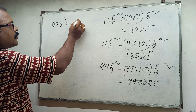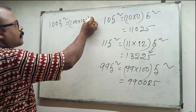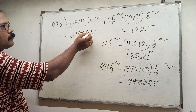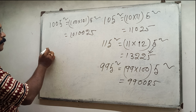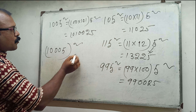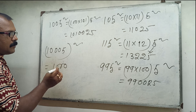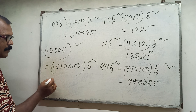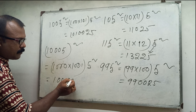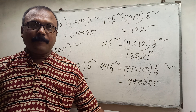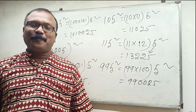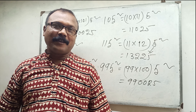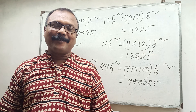1005 squared: 100 into 101, and 5 squared. So 1010025. Now 10005 squared: 1000 into 1001, and 5 squared. That is equal to 100050025. So you can keep going with the next one. Thank you for watching my channel.